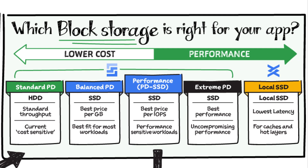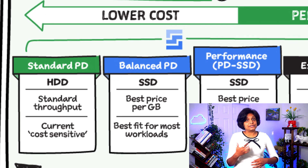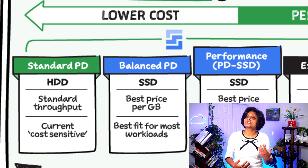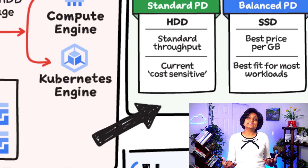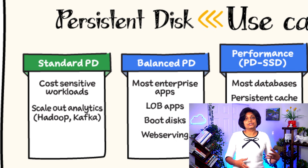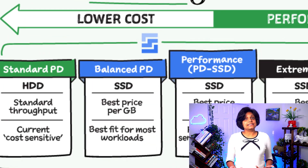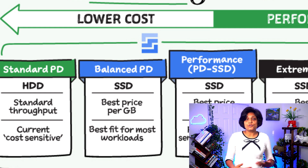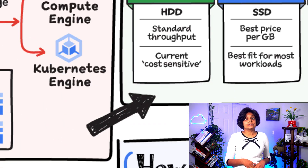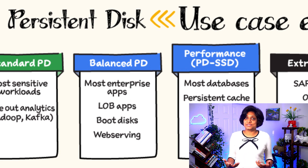There are a few options depending on cost and performance requirements. Standard Persistent Disk is HDD — it provides standard throughput and is the most cost-effective option, best used for cost-sensitive applications and scale-out analytics with Hadoop and Kafka. Balanced Persistent Disk is SSD and is the best price-per-GB option, fit for most common workloads such as most line-of-business applications, boot disks, and web serving.